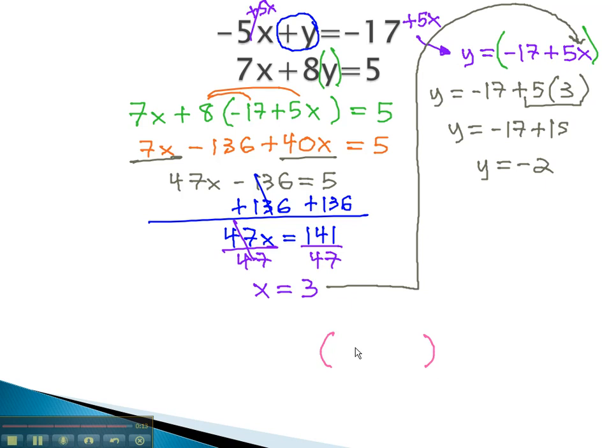As an ordered pair, x, y, 3 comma negative 2 is the solution to our system of equations. By isolating our variable and substituting, we can solve our system.